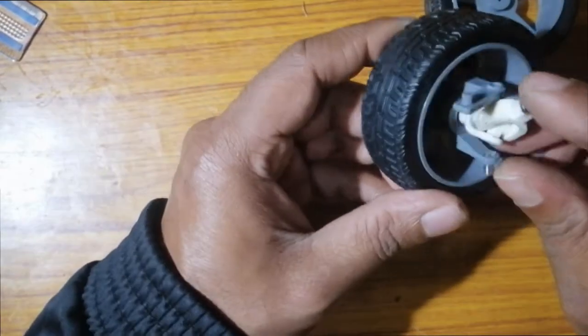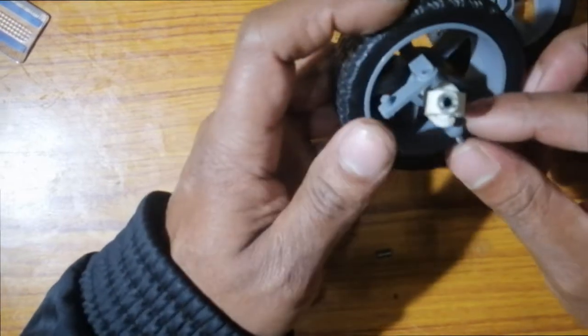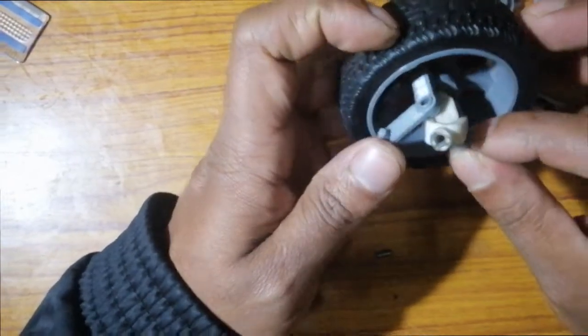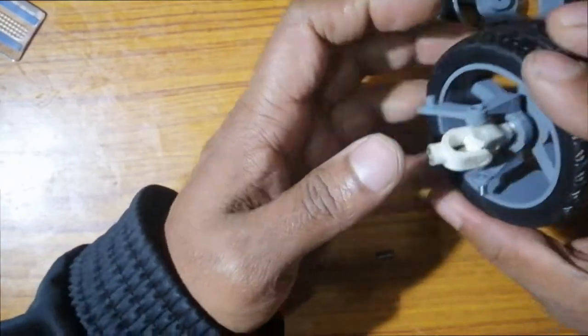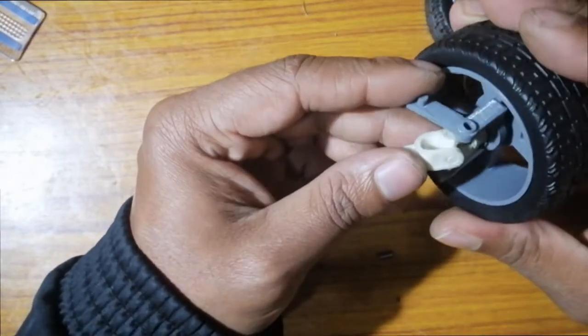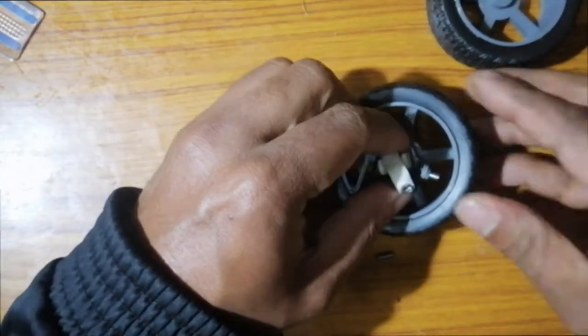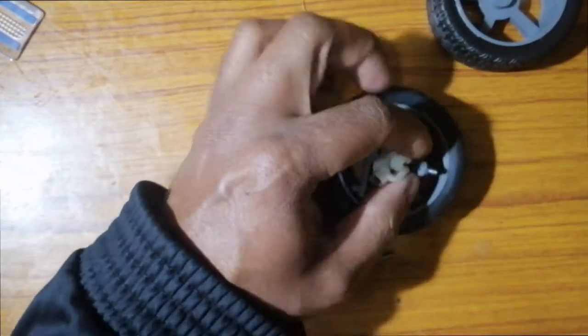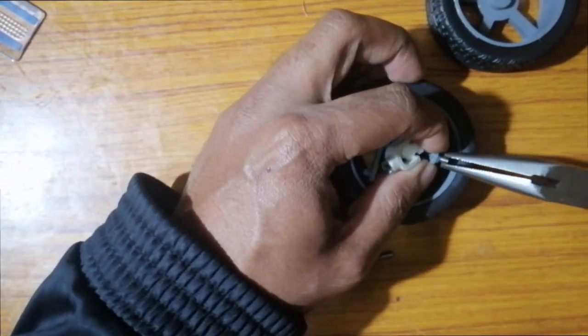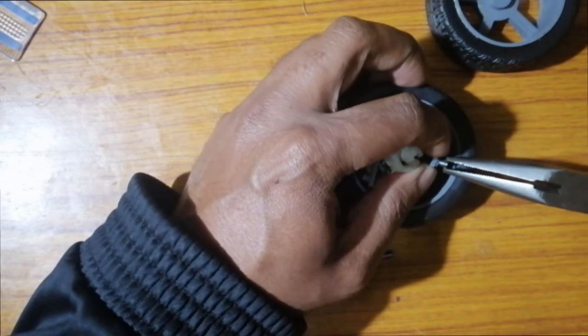As you can see, this is a lock nut which I placed first. It will hold the position of the second part of the wheel steering assembly. Let's insert it some more inside. The position is almost secured.